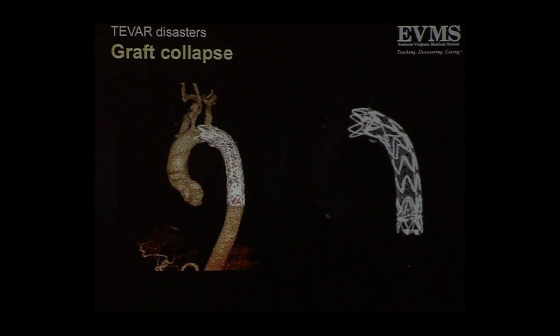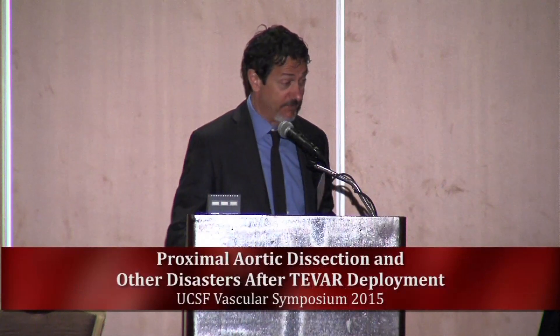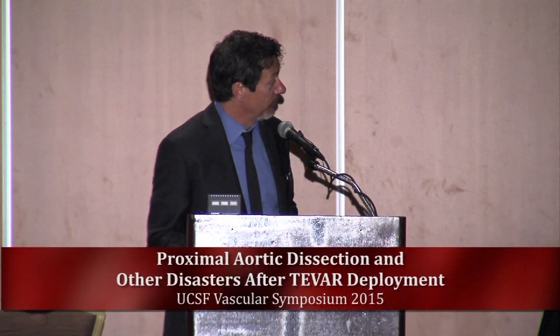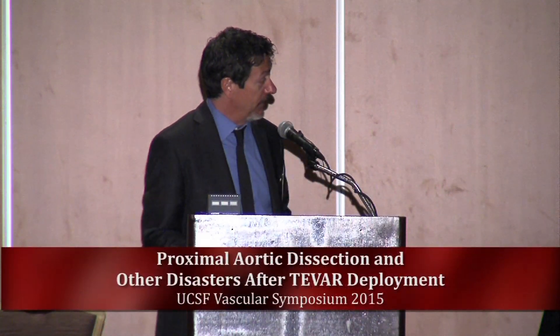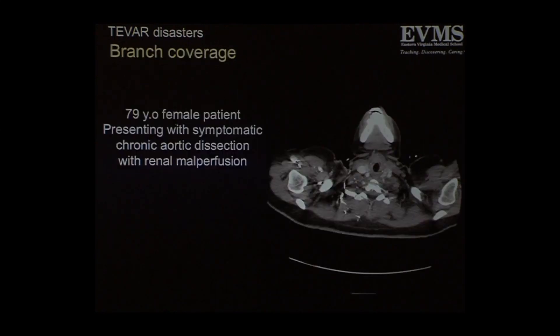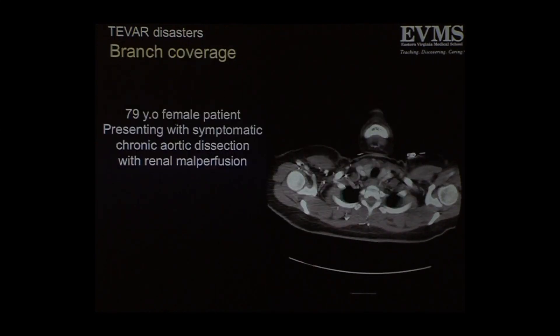Here's the post-op CT at one year. It is possible to treat a graft collapse with a redo TVAR — tricky, but doable. Can it be treated? I would say a lot of those complications can be treated with endovascular technique.